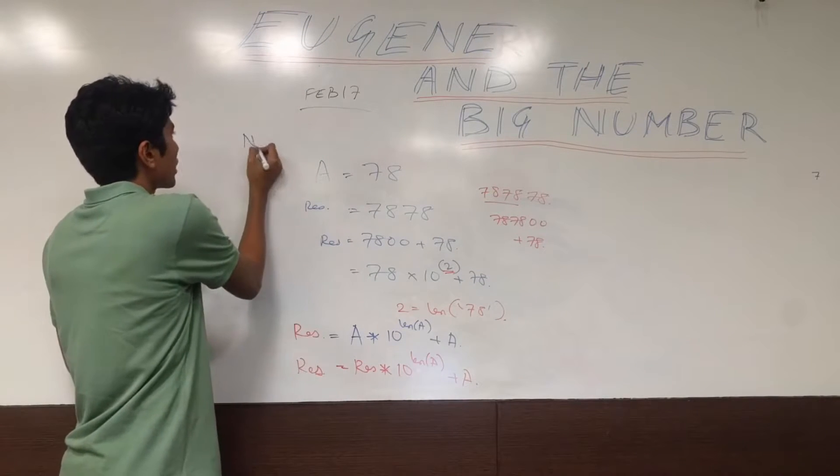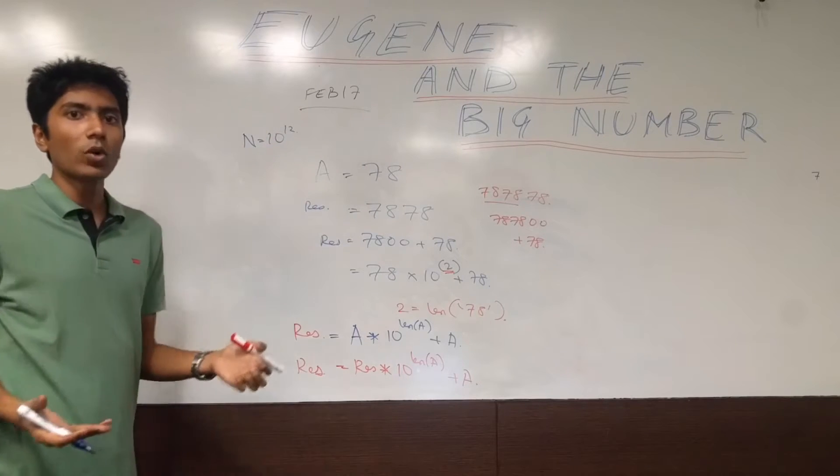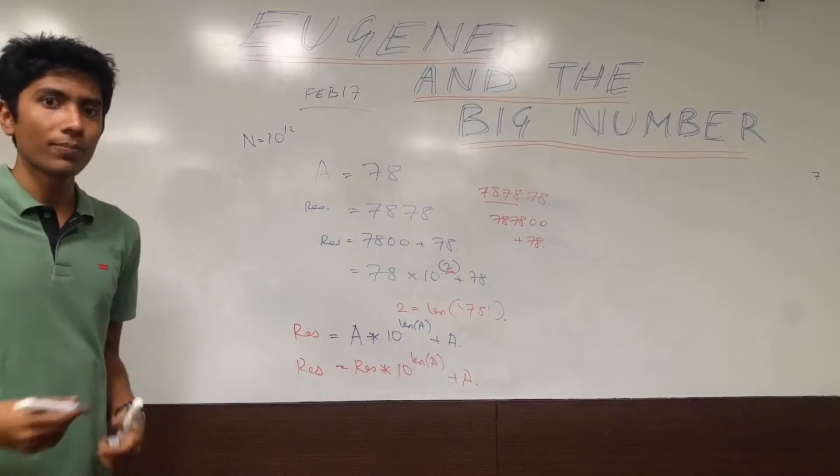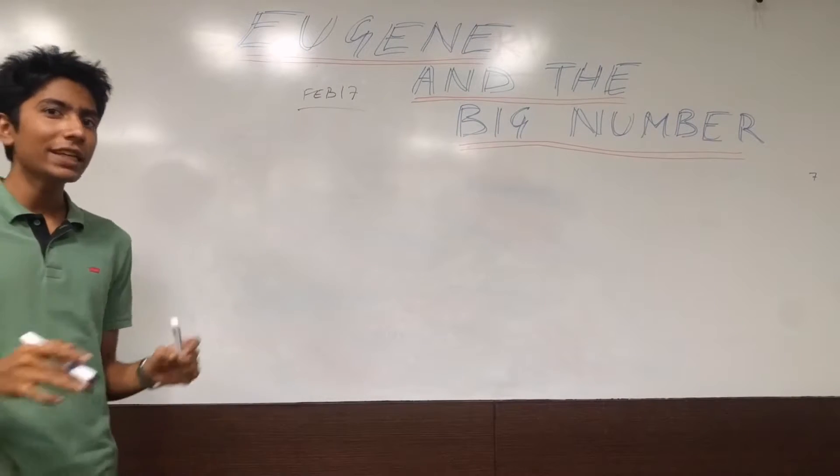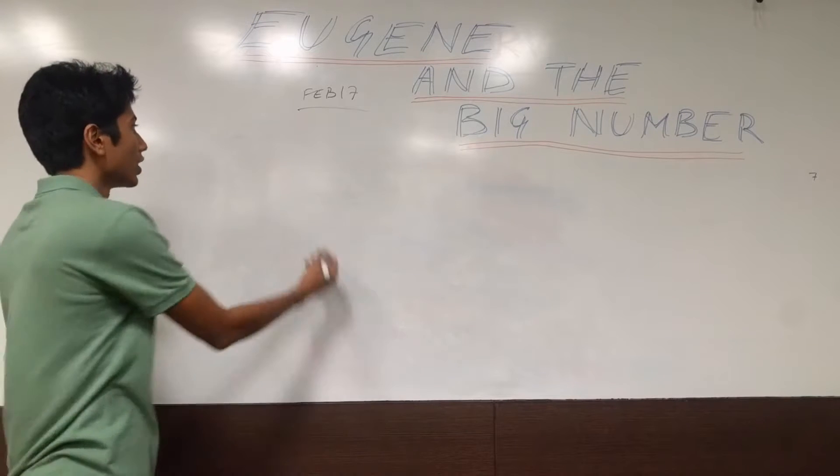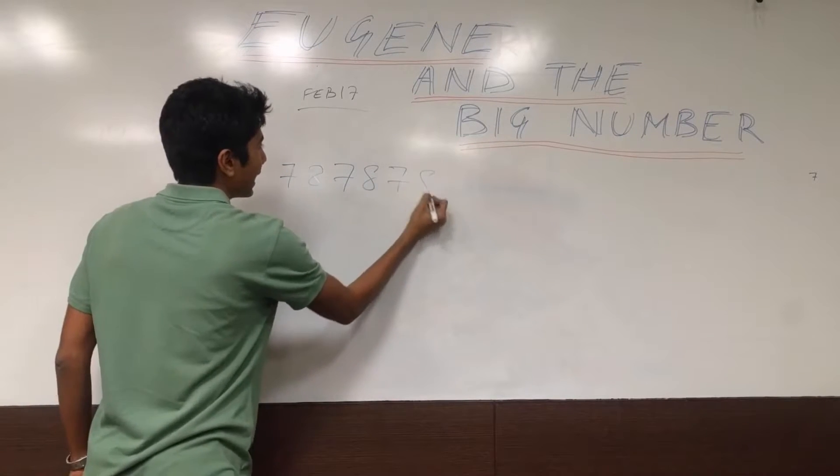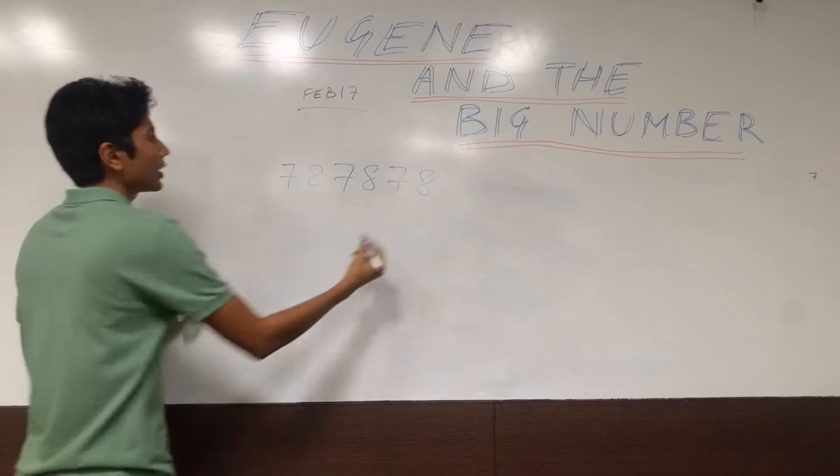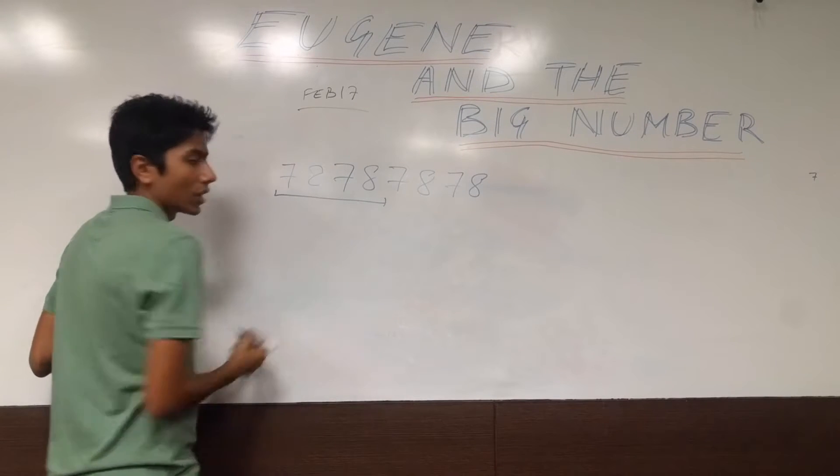So n is potentially 10 raised to the power 12. So 10 raised to the power 12 computations will be required if you are going to be solving this way. So that's way too slow. And the key observation is to not think in linear fashions but in exponential fashion. So instead of 78, 78 and 78, what we are going to be thinking about is adding another 78 here and then checking what if I had this result.